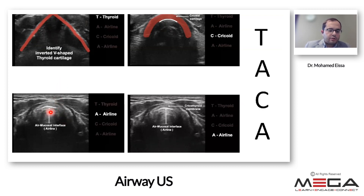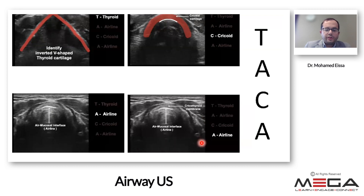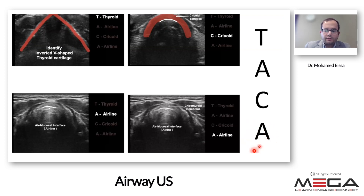The cricothyroid membrane or air-mucosal interface will always be hyperechoic, unlike the cartilages which are hypoechoic. Moving further down, you see the cricoid cartilage, which is more circular rather than inverted angulated B-shaped like the thyroid cartilage. When you reach the cricoid cartilage, move the probe back upwards cranially to get the air-mucosal interface. That is why we call it the TACA technique: Thyroid — Airline — Cricoid cartilage — then slide upwards again to the airline where you identify the cricothyroid membrane.